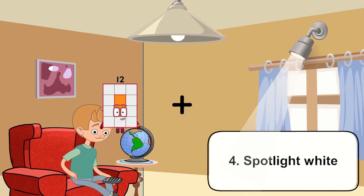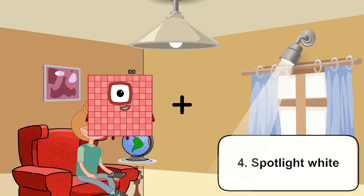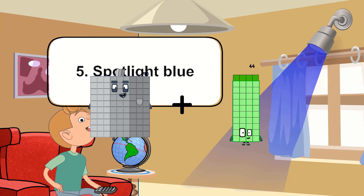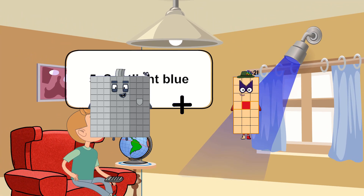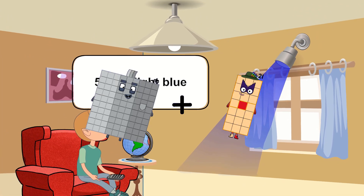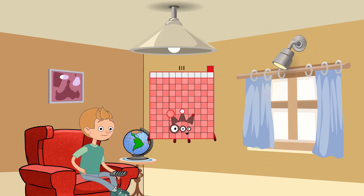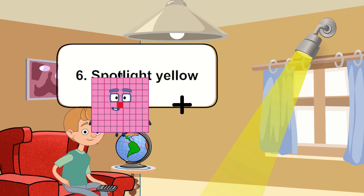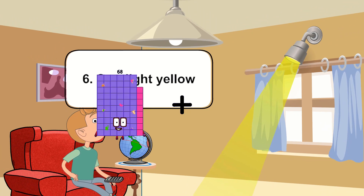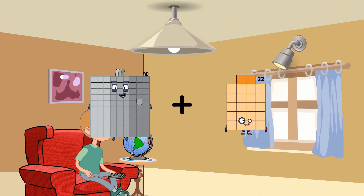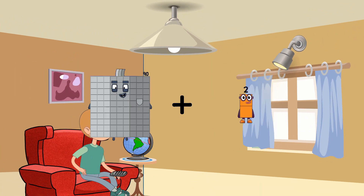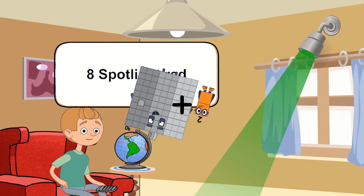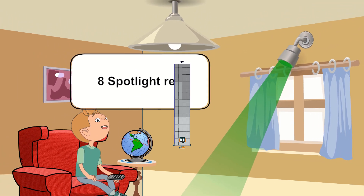90 plus 21 equals 111. 90 plus 2 equals 92.